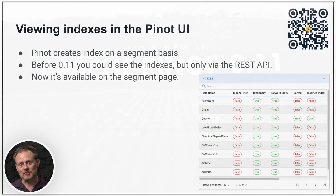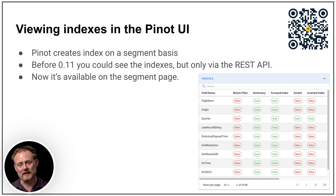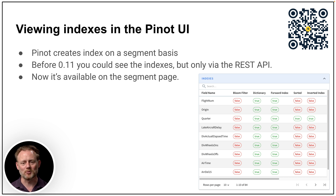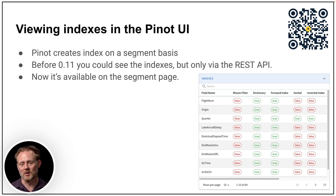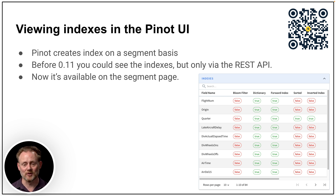First off, you can now view indexes in the Pinot UI, in the browser. You've always been able to do this with a REST API, but now you've got a nice browser-based way to do it — a lot cleaner and easier if you're not hands-on in the REST API all the time. On many of the slides here, you'll see a QR code at the upper right that takes you to a blog post, docs page, or other resource with more detail. Be sure to scan those.